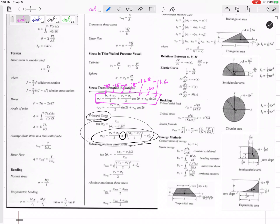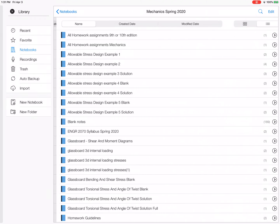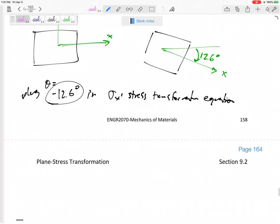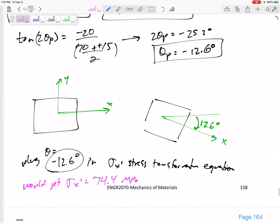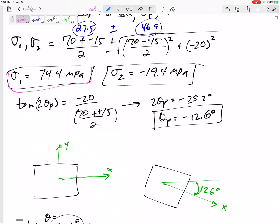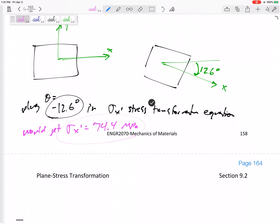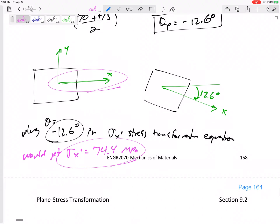Alright, plug those in and I would get a sigma x—would get—my new sigma x is 74.4. Okay, so that's a good sign that I got one of these two stresses. And so that means that this one belongs on the x face. This x face was rotated 12.6 degrees clockwise, so it is now right here.